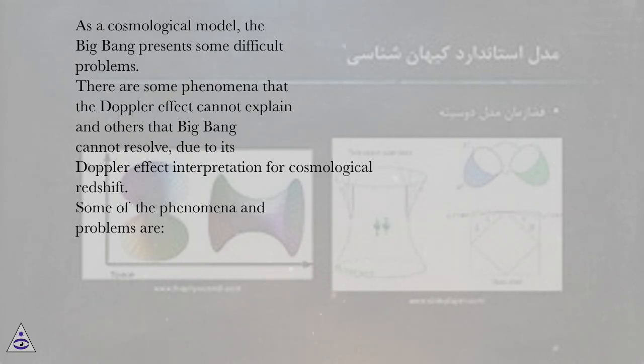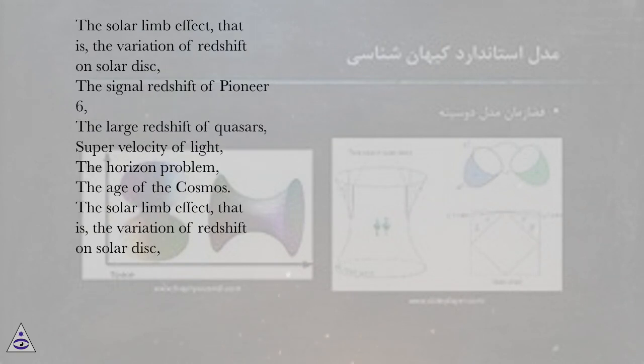Some of the phenomena and problems are the solar limb effect, that is, the variation of redshift on solar disk. The signal redshift of Pioneer 6. The large redshift of quasars. Supervelocity of light. The horizon problem. The age of the cosmos.